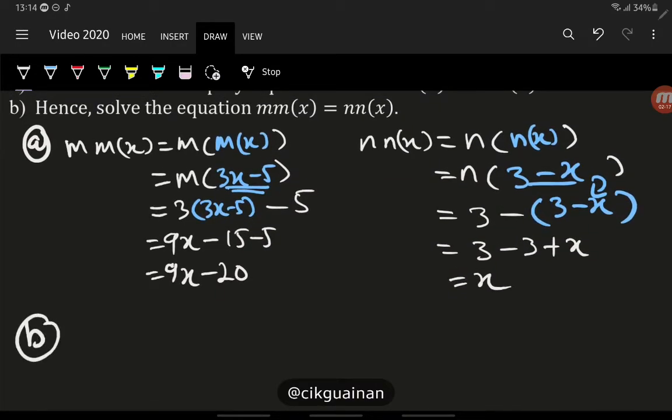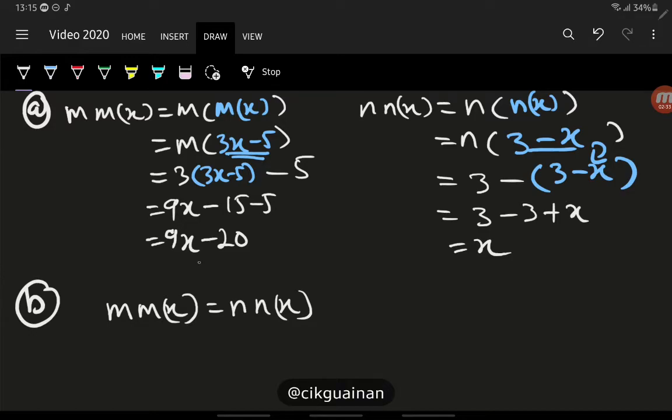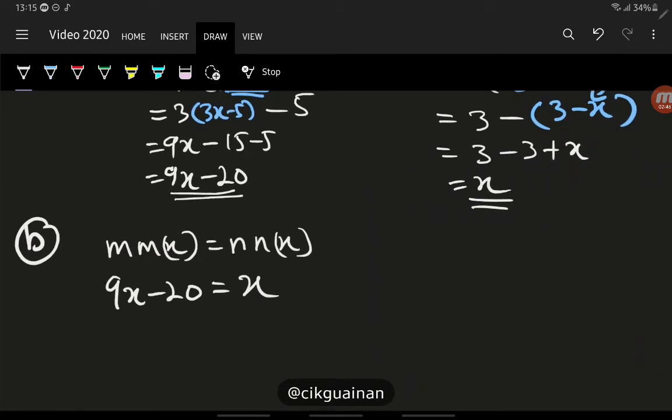The second one, hence solve the equation m(m(x)) = n(n(x)). So m(m(x)) = n(n(x)). We have found m(m(x)) already over here, so 9x minus 20 on the left hand side, and n(n(x)) which is x over here on the right hand side. So we are going to solve this for the value of x.